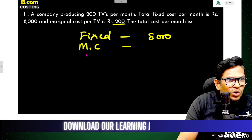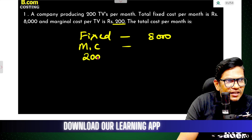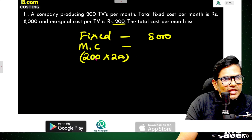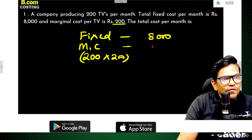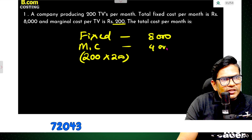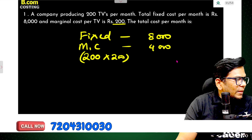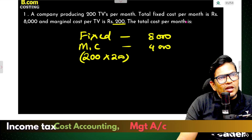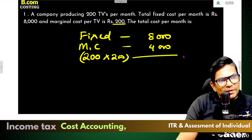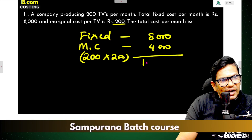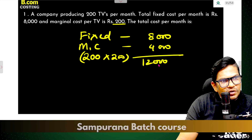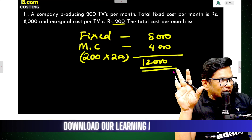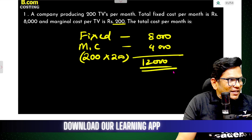He got $2,000... total cost per month - he got $24,000. Is that clear?